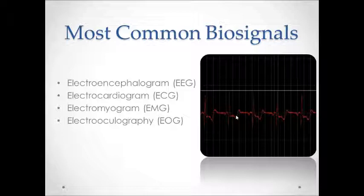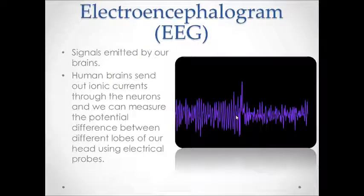We're not going to dive deep into the details; we're just going to cover the very basics in this video. EEG signals are electrical signals produced along your scalp. When we think, our brain sends ionic currents within the neurons, and with the help of electrical probes, we can measure the potential difference and use it to detect brain activities.